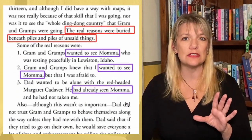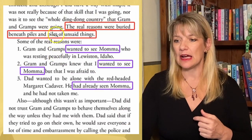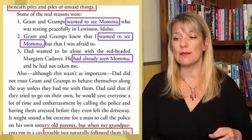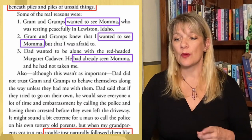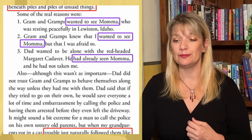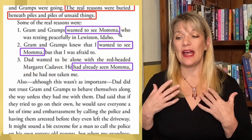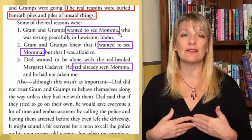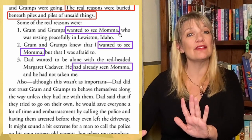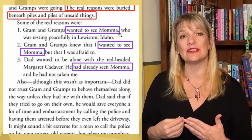One of the most poignant uses of repetition is that this protagonist is without a mom. She makes a little list of the real reasons for the upcoming trip: 'Graham and Gramps wanted to see Mama, who was resting peacefully in Lewiston, Idaho. Graham and Gramps knew that I wanted to see Mama, but that I was afraid to. Dad wanted to be alone with the redheaded Margaret Cadaver. He had already seen Mama and he had not taken me.' This repetition of Mama, Mama, Mama gives us insight into the emotional state of this girl — it's a self-preservation technique on the part of a young girl who is missing her Mama. So much is wrapped up into this use of repetition.